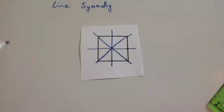Regular shapes have the number of lines of symmetry equal to the number of sides they have. For instance, an equilateral triangle has got three lines of symmetry, a square has got four, a regular pentagon has got five, and so on.